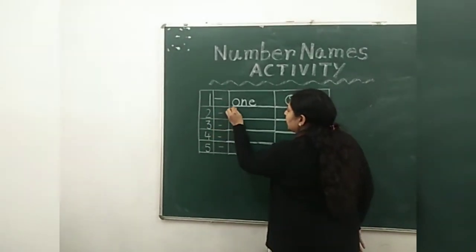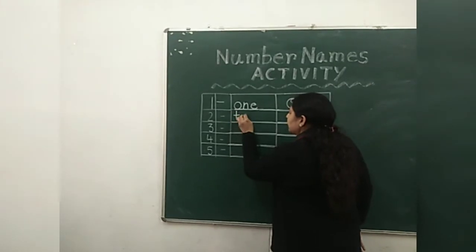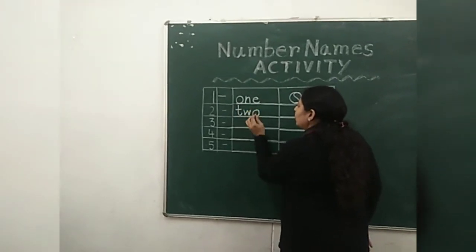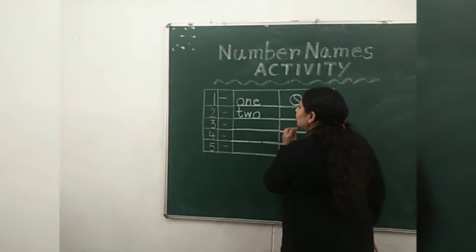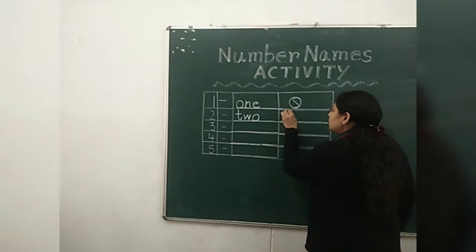Two. The number name is T-W-O. Two. Now we will draw two objects.